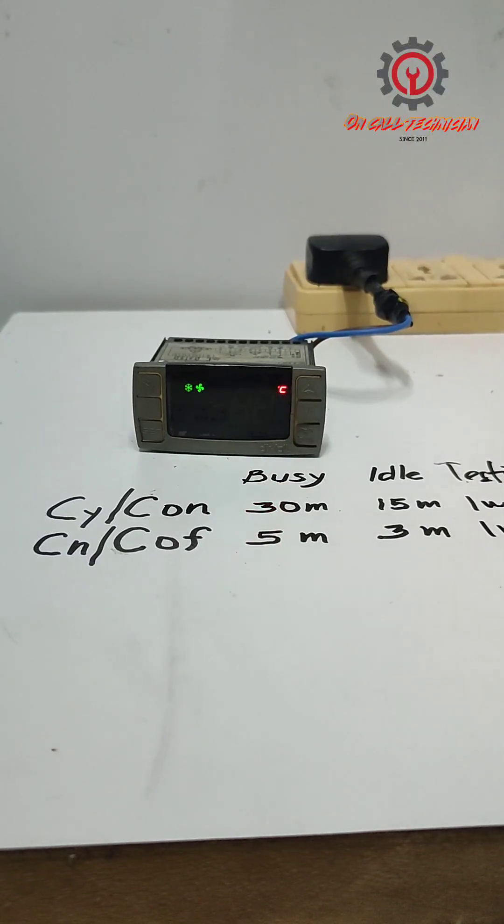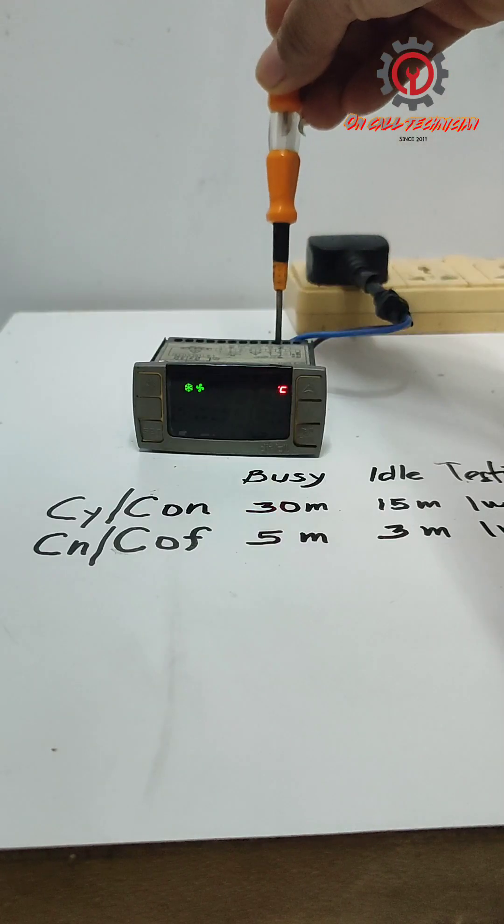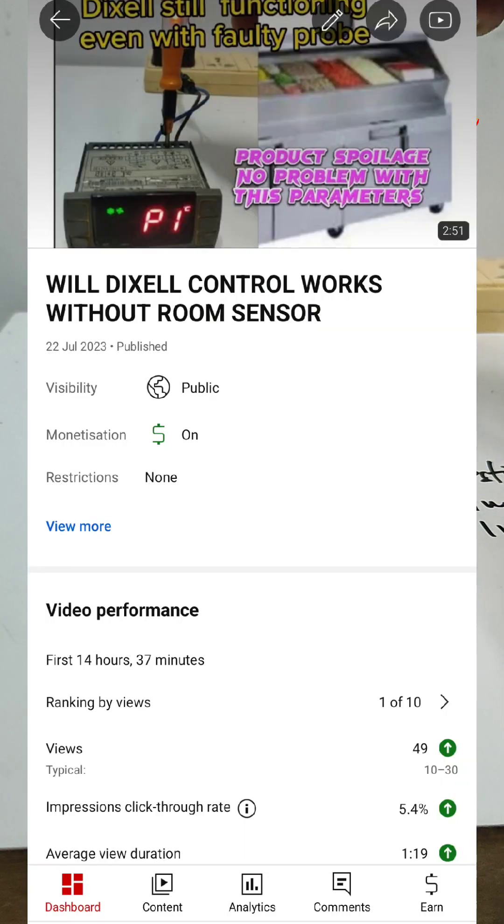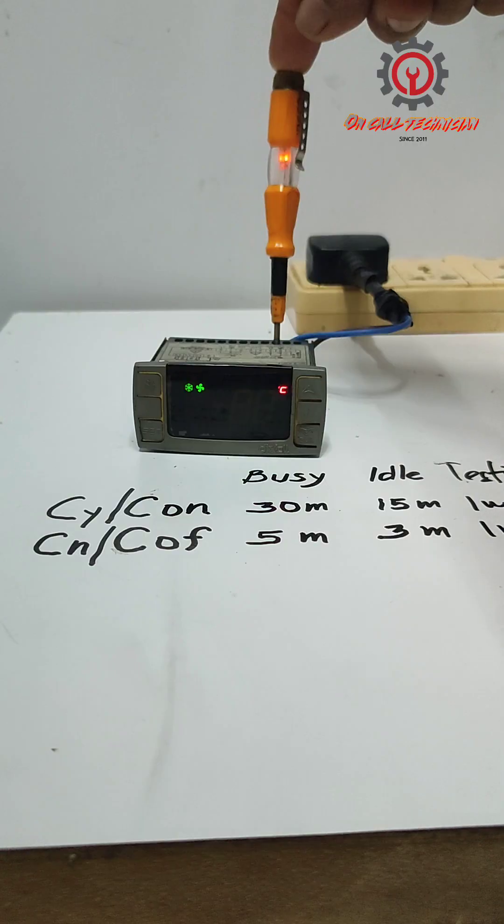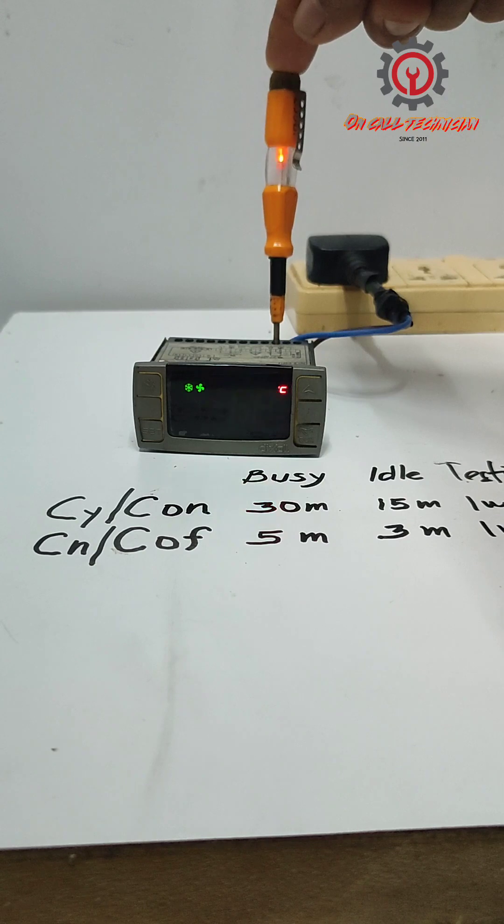Welcome guys, this is part of my tutorial entitled 'Will the Pixel Control Work Without Sensor?' I just put the CY and CN to one minute so you can visualize that there is a cut-in and cut-off even without sensor. I'm not going to skip this, just wait and see what will happen.